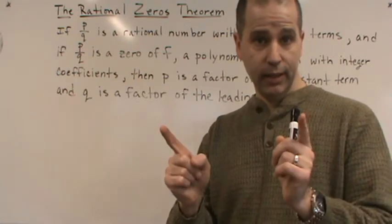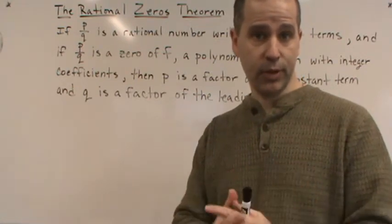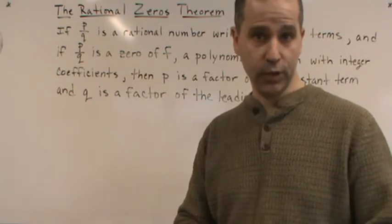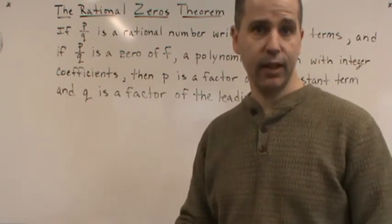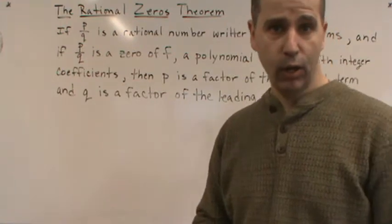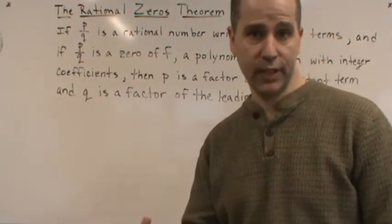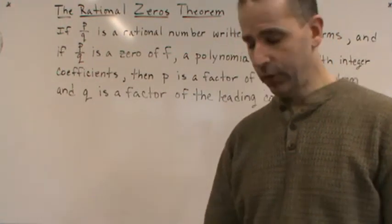Then we start whittling it down using those possible rational roots until we get a quotient that is either a quadratic or something we can use other methods with. This theorem that I'm going to go over is basically what we're going to use to get us going.